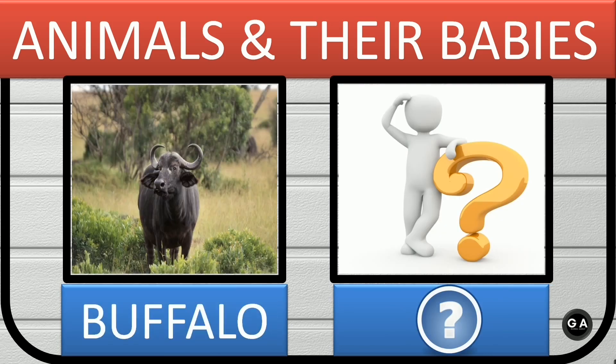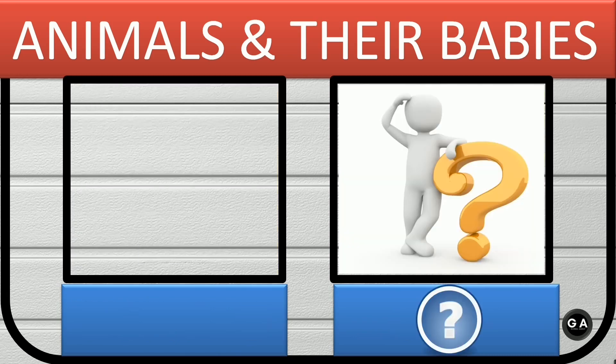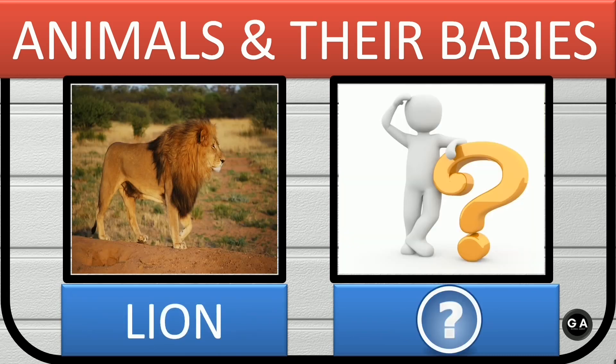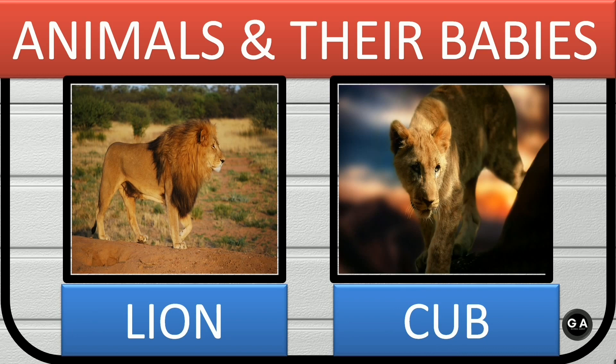Buffalo. Buffalo's baby is calf. Lion. Lion's baby is cub.